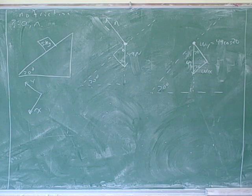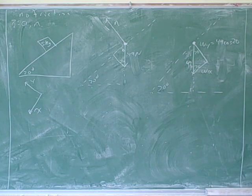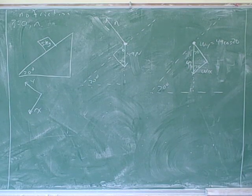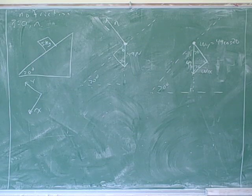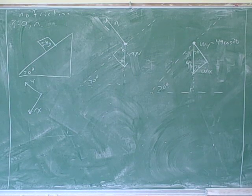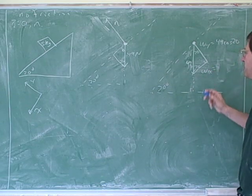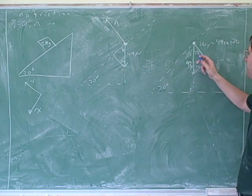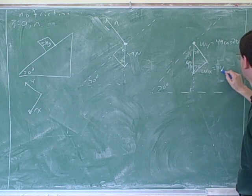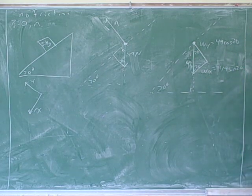We need the acceleration, so we need to find the force. And the force is the x component, which is 49 times the sine of 20. Yeah, the x component over here is opposite to the 20. So this would be 49 times the sine of 20. Good.